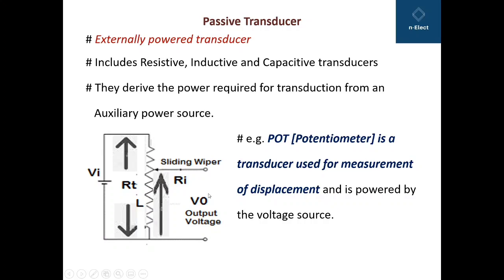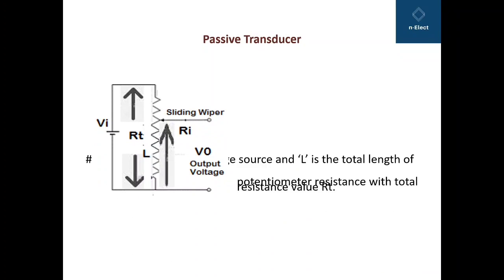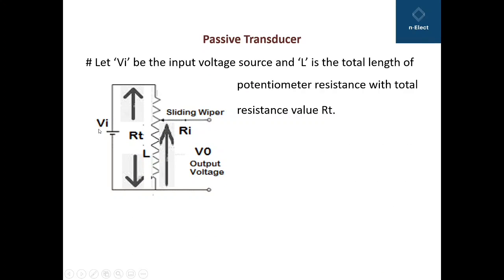Now this is called a pot, that is potentiometer, which is a transducer used for measurement of displacement and is powered by the voltage source. As you can see, VI is applied across the fixed point of it. Let VI be the input voltage source and L be the total length of the potentiometer resistance with total resistance of RT.